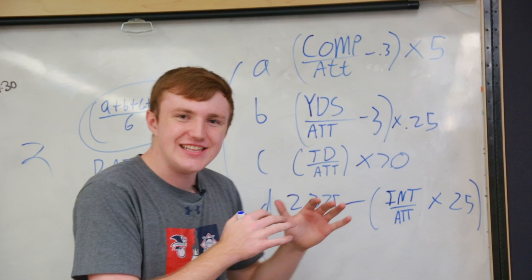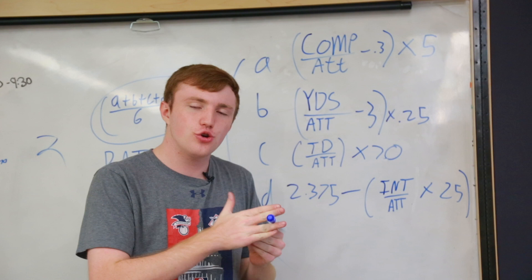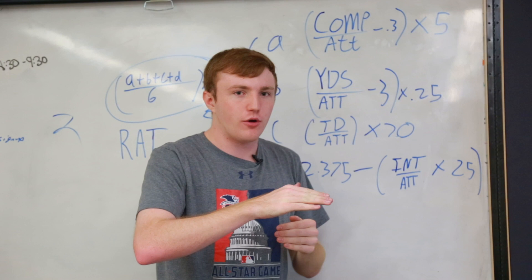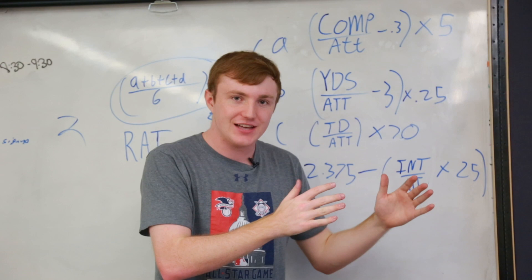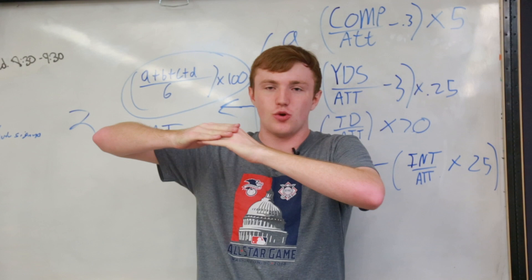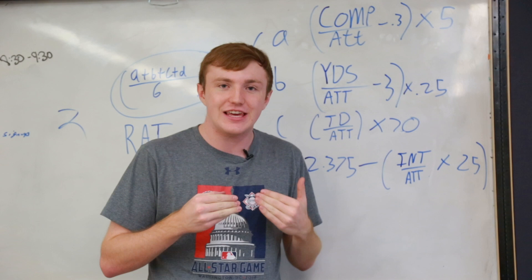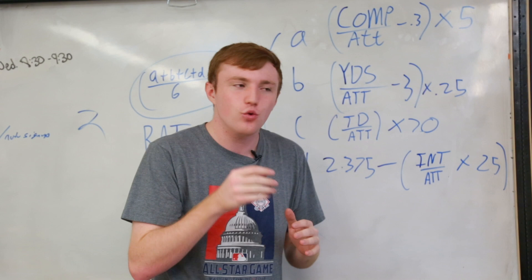But here's the stupidest part of the statistic: if any of these numbers exceeds 2.375, it gets set back to 2.375. So if you complete 100% of your passes, the value A would be 3.5, but the limit sets it back to 2.375. In passer rating, there is no difference between a quarterback who completes every pass and a quarterback who completes 77.5% of his passes. Any quarterback above that threshold is seen as equal in completion percentage.